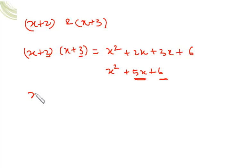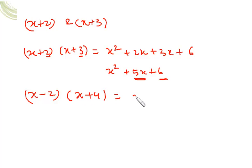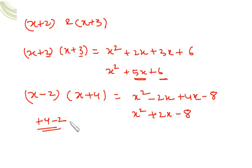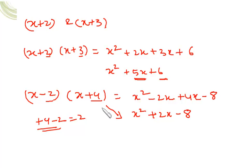Let's take one more example: (x-2)(x+4). Multiplying gives x²-2x+4x-8, which is x²+2x-8. The coefficient of x is +4+(-2) = 2, and the constant term is (+4)×(-2) = -8. Again, interconversion between the two forms is possible.